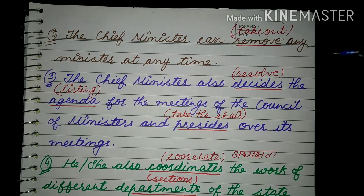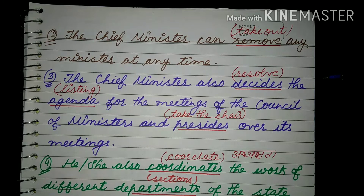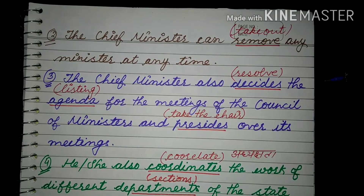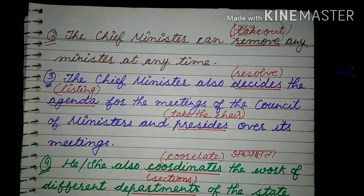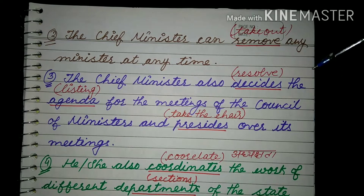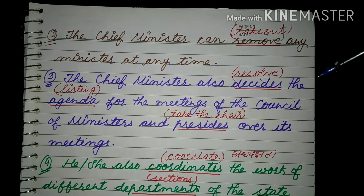The chief minister also decides — निश्चय करना, निर्णय लेना — the agenda for the meeting of the council of ministers and presides over its meetings. जो council of ministers की meetings के लिए वो agenda listing करता है, निर्णय लेता है, और presides यानी take the chair — कौन chair लेगा वो निश्चित करता है।